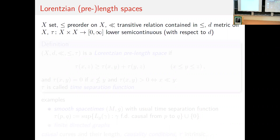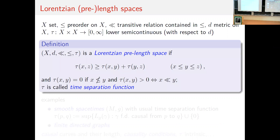What is the basic structure — the replacement of the metric space in the Lorentzian setting? You have a set X with a relation ≤ which is a pre-order (transitive and reflexive), and a relation ≪ which is transitive and contained in ≤, meaning if x ≪ y then x ≤ y. We put a background metric on X for topology. Crucially, τ is a function from X×X into [0,∞), lower semi-continuous with respect to the metric topology. We call this a Lorentzian pre-length space if τ satisfies the reverse triangle inequality: τ(x,z) ≥ τ(x,y) + τ(y,z) for triples of causally related points.